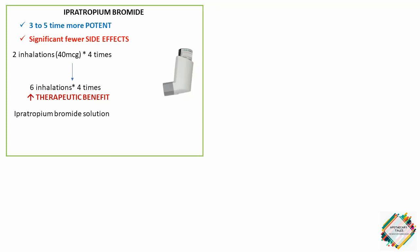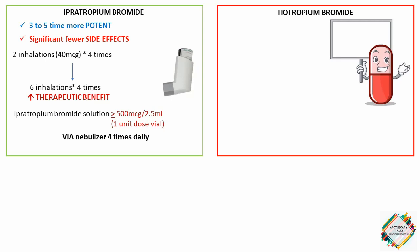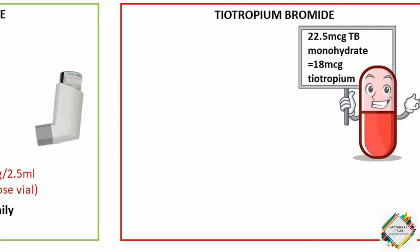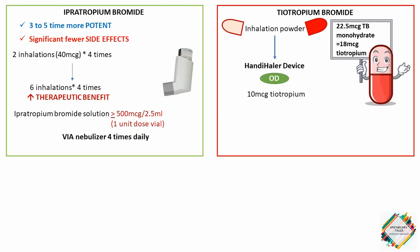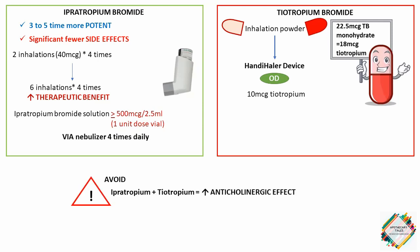The dosing of ipratropium bromide solution is 500 micrograms per 2.5 ml, i.e., 1 unit dose vial or more via nebulizer 4 times daily. Tiotropium bromide capsules contain about 22.5 micrograms of tiotropium bromide monohydrate, equivalent to 18 micrograms of tiotropium. It is an inhalation powder in a hard capsule administered once daily only via a HandiHaler device, which delivers 10 micrograms of tiotropium. Patients should generally not be placed on both ipratropium and tiotropium due to increased risk of anticholinergic side effects and no additional bronchodilation being achieved.